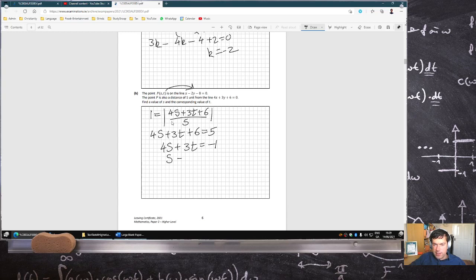s minus 2t equals 8. But if I multiply this by 4, that's 32. That's 8. That's 4. And if I subtract, that's 11t equals minus 33. T equals minus 3. If I sub that back into this, s equals 2t plus 8, which is minus 6 plus 8, which is 2.